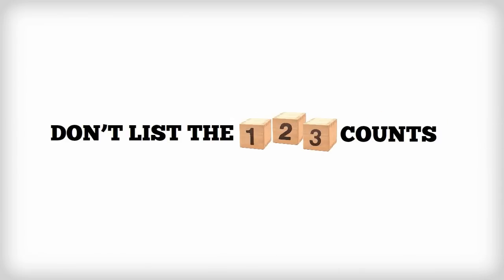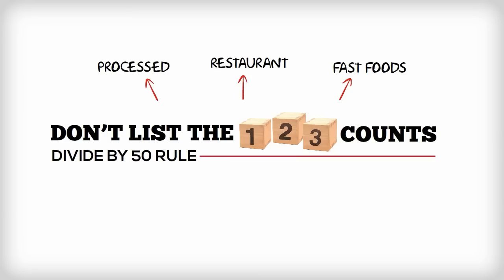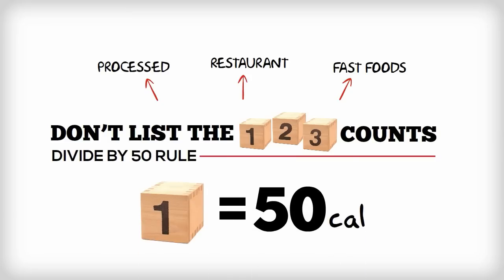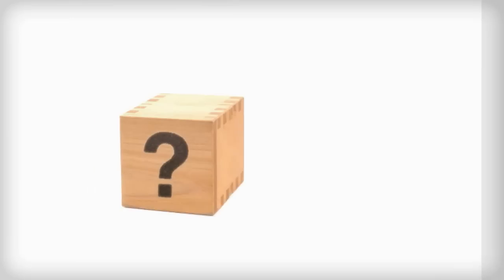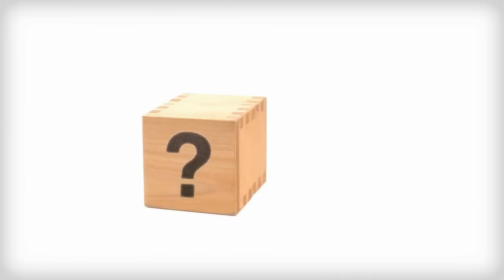We don't list the block counts for processed, restaurant, or fast foods. These foods all fit into the divide by 50 rule, where one block equals 50 calories. So to determine the blocks of foods, you simply take the calorie counts and divide it by 50.